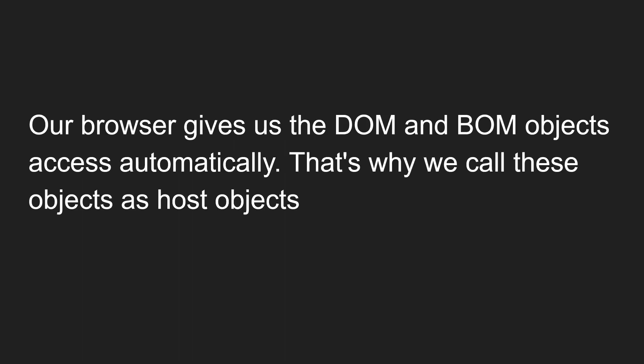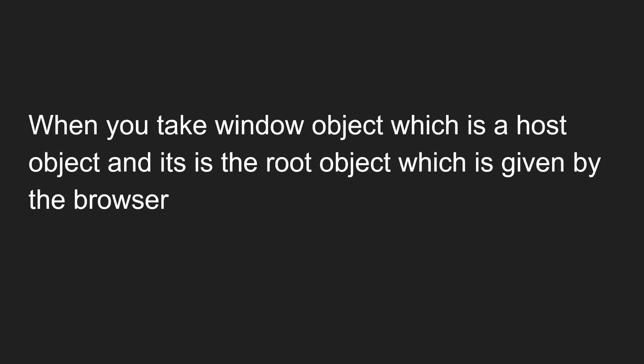Whenever you run JavaScript or any application, the DOM and BOM objects are automatically given access by the browser — that is the reason we call these objects host objects. This is the difference between host objects and native objects. Host objects are provided by the environment depending on where JavaScript is running, whereas native objects are predefined objects available in JavaScript itself, regardless of the environment.